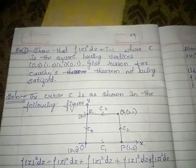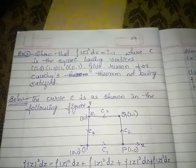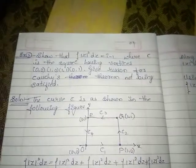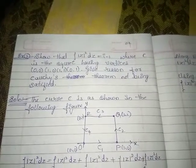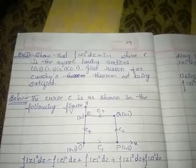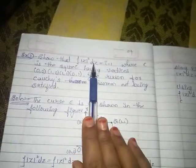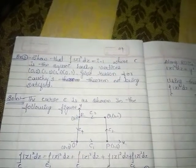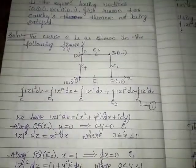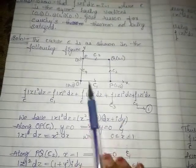Next example: show that the integration over C of |z|² dz = i - 1, where C is the square having vertices (0,0), (1,0), (1,1), (0,1), and give the reason for Cauchy's theorem not being satisfied. If the integral were 0, Cauchy's theorem would be verified, but here the value is i - 1, so Cauchy's theorem is not satisfied.